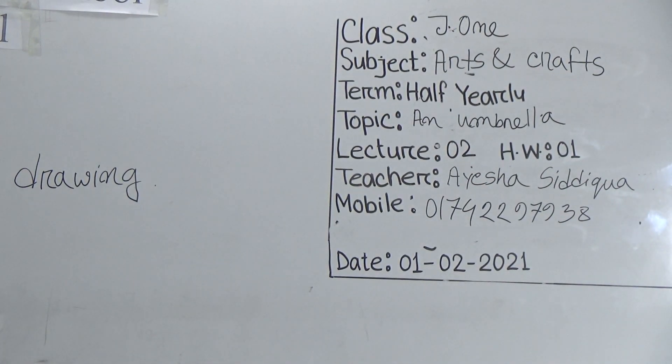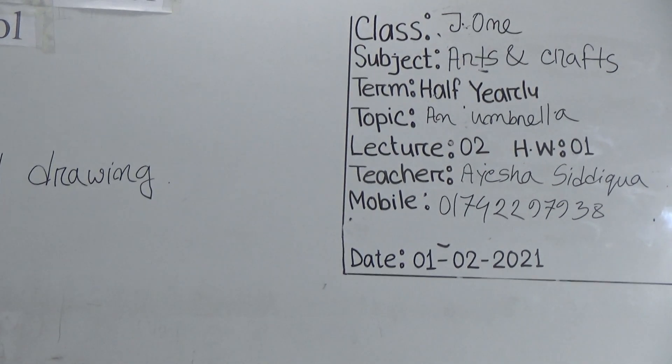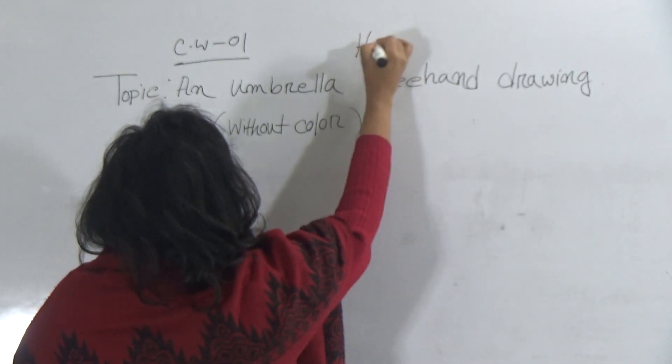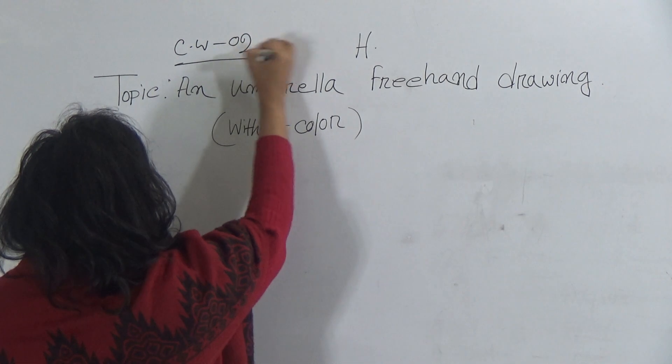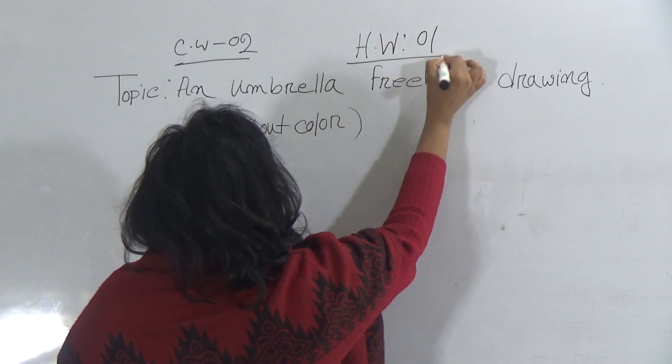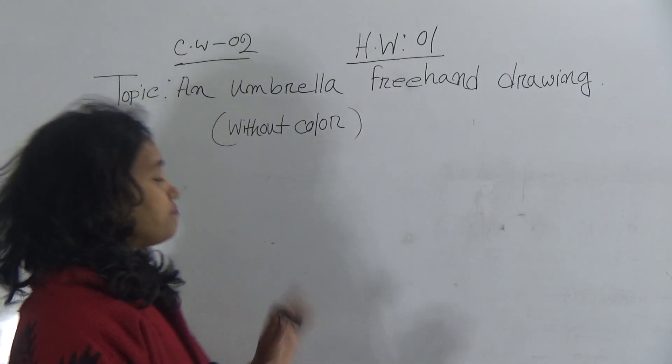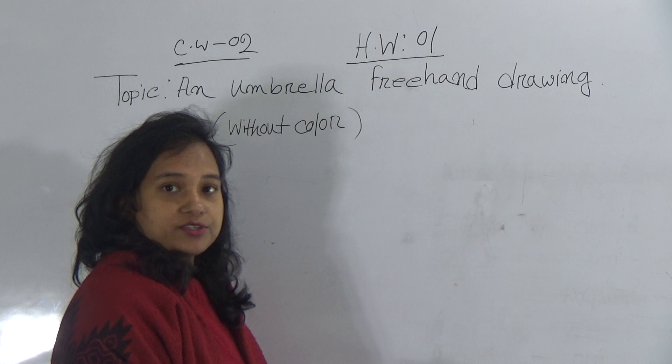So everyone must write down the homework number and class number. That means CW number 1 and the SW number, CW number 2. Sorry, I am sorry. And SW number 1. You must write this every homework and then you will start your drawing.